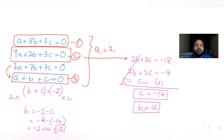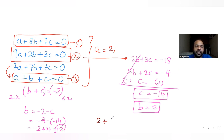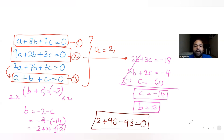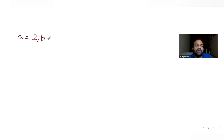With c = -14, substituting back: b = -2 - c = -2 - (-14) = 12, so b = 12. Verifying in equation 1: 2 + 8×12 + 7×(-14) = 2 + 96 - 98 = 0. This confirms a = 2, b = 12, c = -14 are correct values satisfying the three equations.